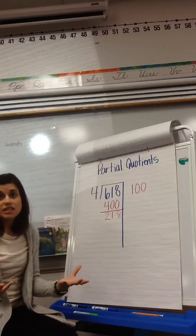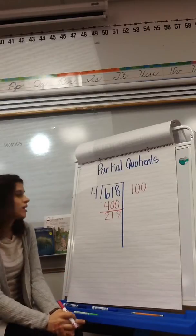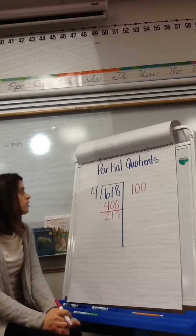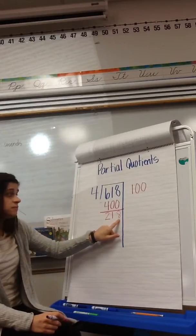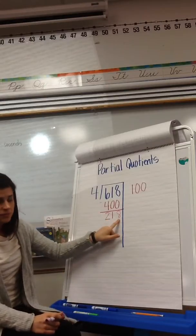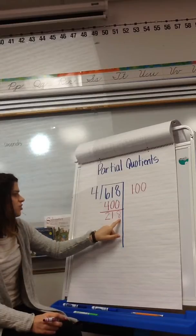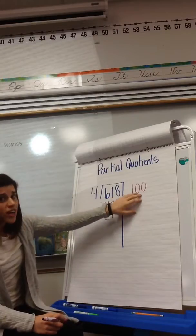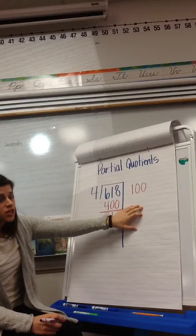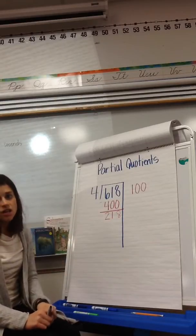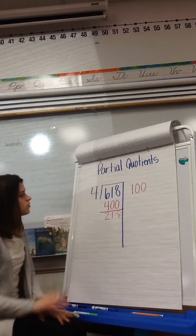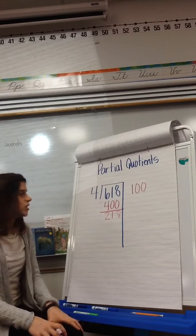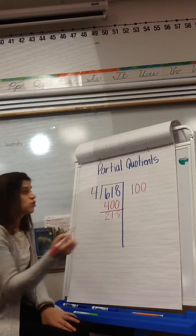So now I have 218, and I can start again with guessing and checking. What number can I multiply by 4 to get closest to 218 without going over? I'm going to try and stick to these easy numbers. I know that 100 would be too big. Let's cut it in half and try 50. So 50 times 4, 200. That doesn't go over. Let's try it.